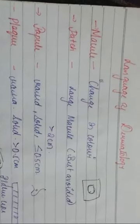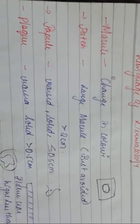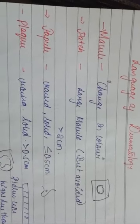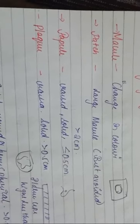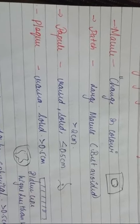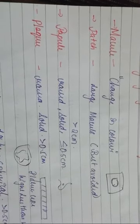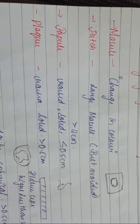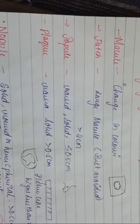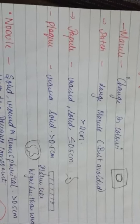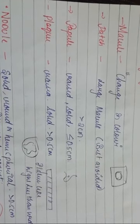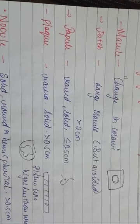Now it is time to understand the language used in dermatology. The first term is macule — a change in colour. The second is patch — a large macule. Third is papule — a raised solid lesion. Fourth is plaque — also raised and solid but more than 0.5 centimetres.